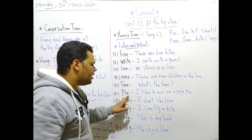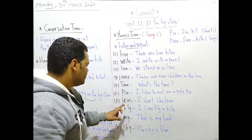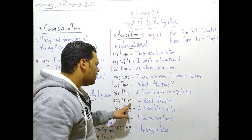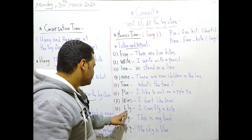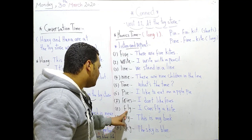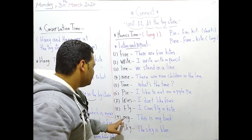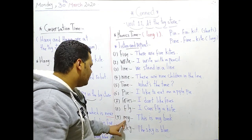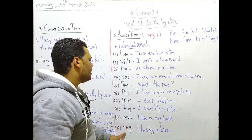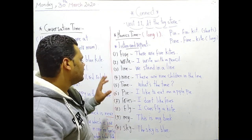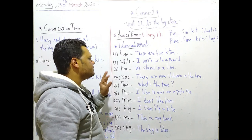Number six: pie. Number seven: fries. Number eight: fly. Number nine: my. Number ten: sky.